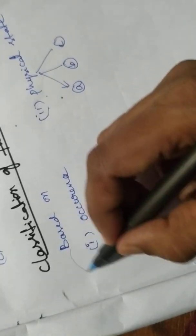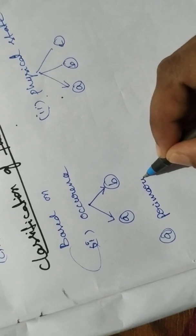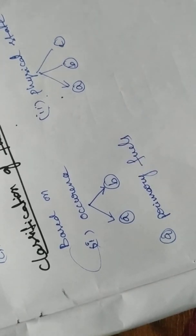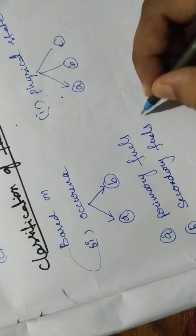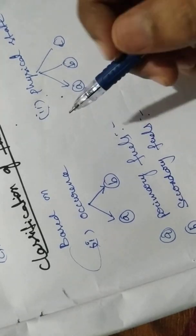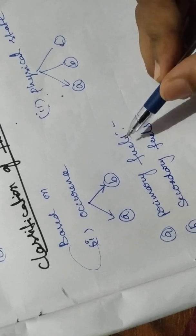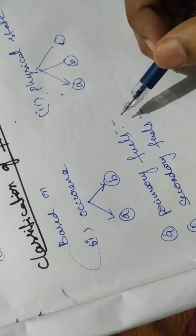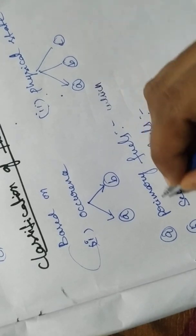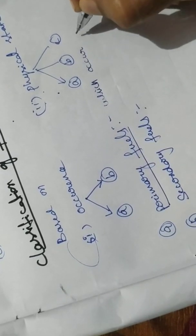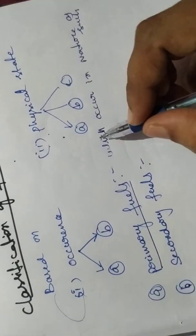Let us first discuss classification based on occurrence. Based on occurrence, fuels are classified into two types. The first is primary fuels — fuels which occur in nature as such. The fuels that are available in nature as such are called primary fuels.